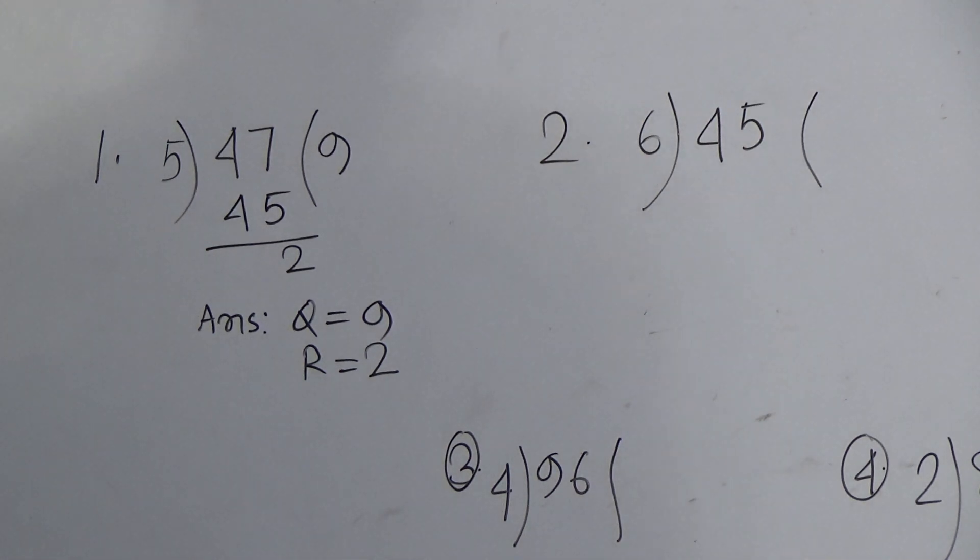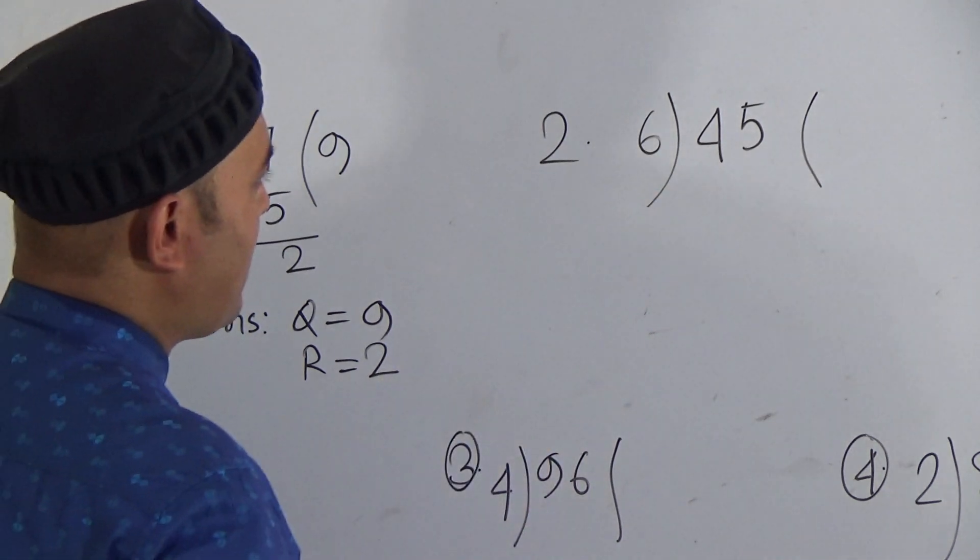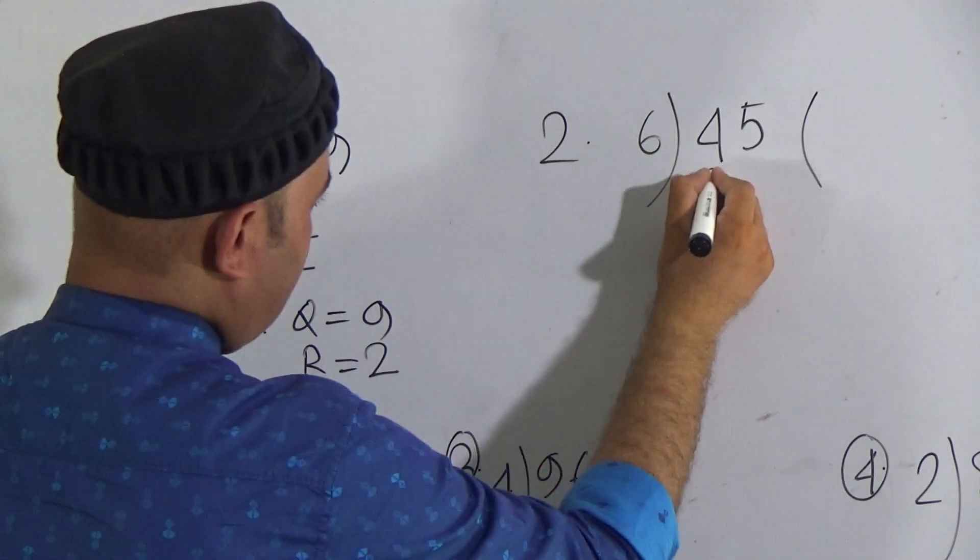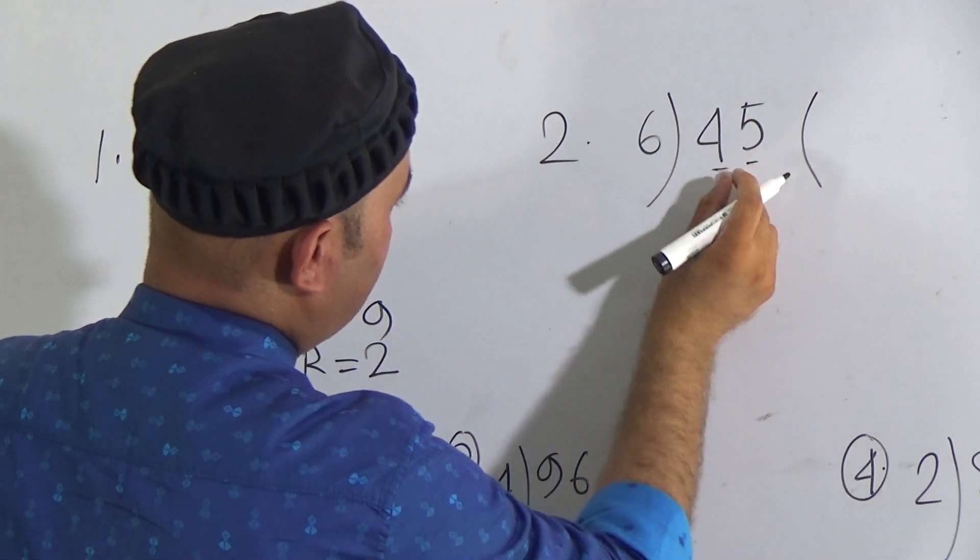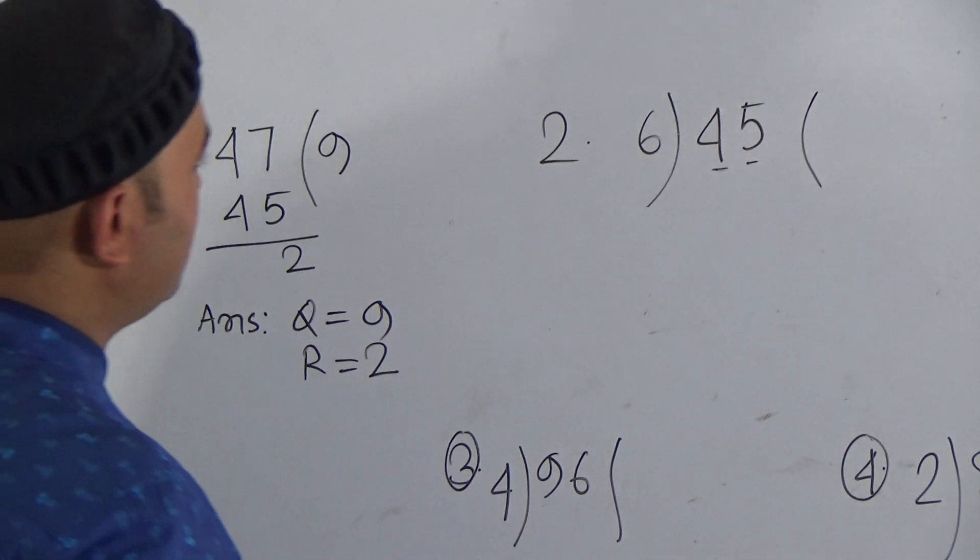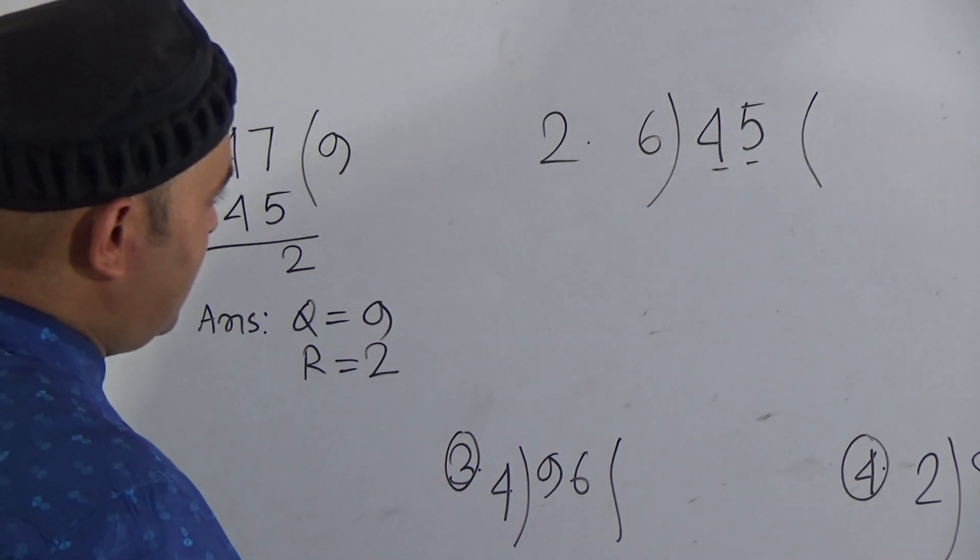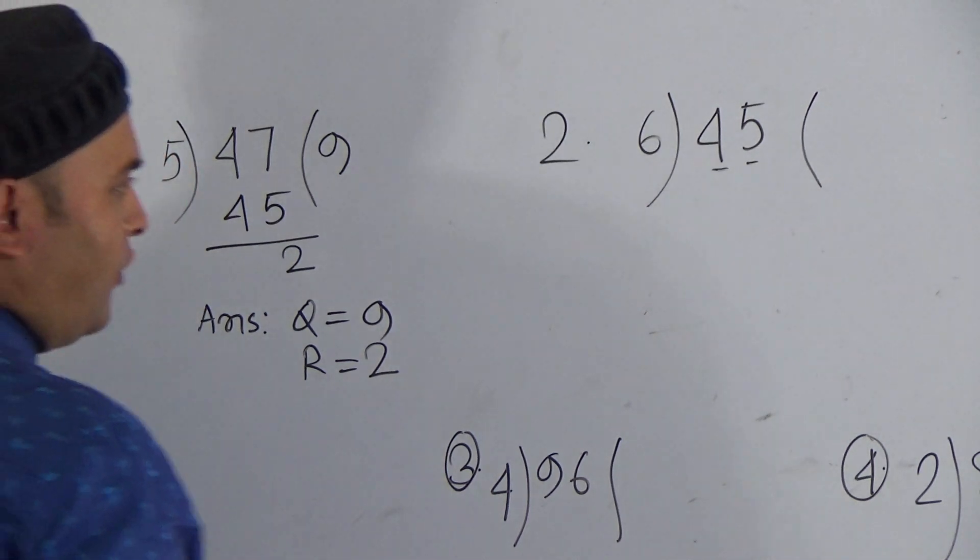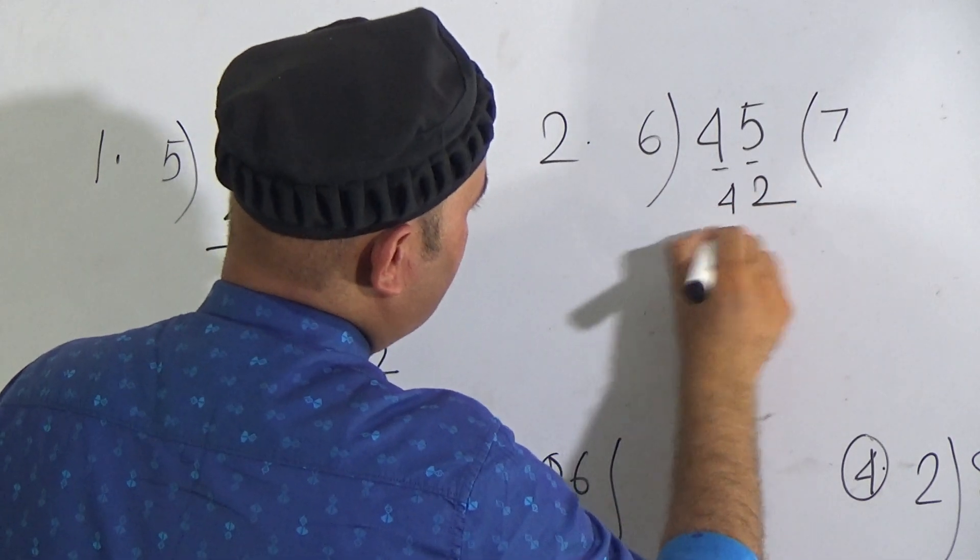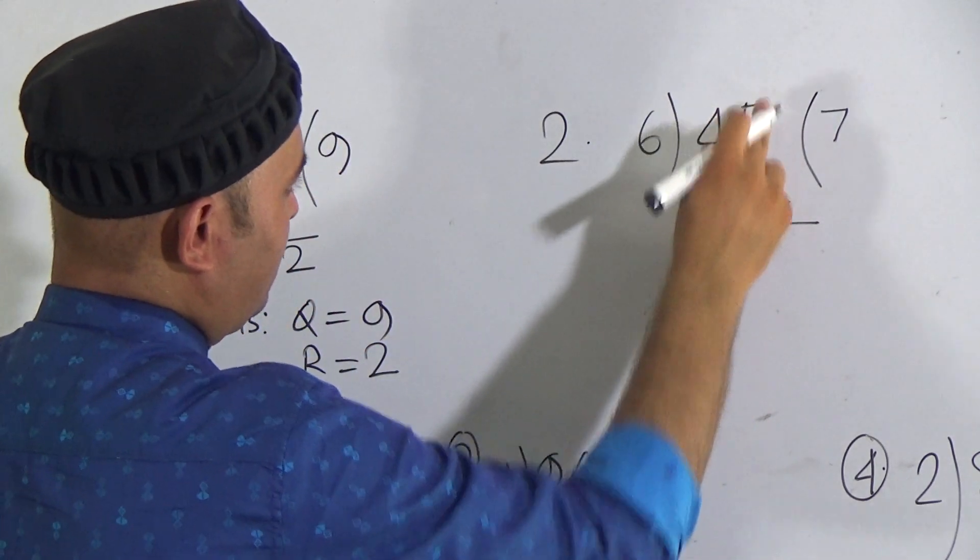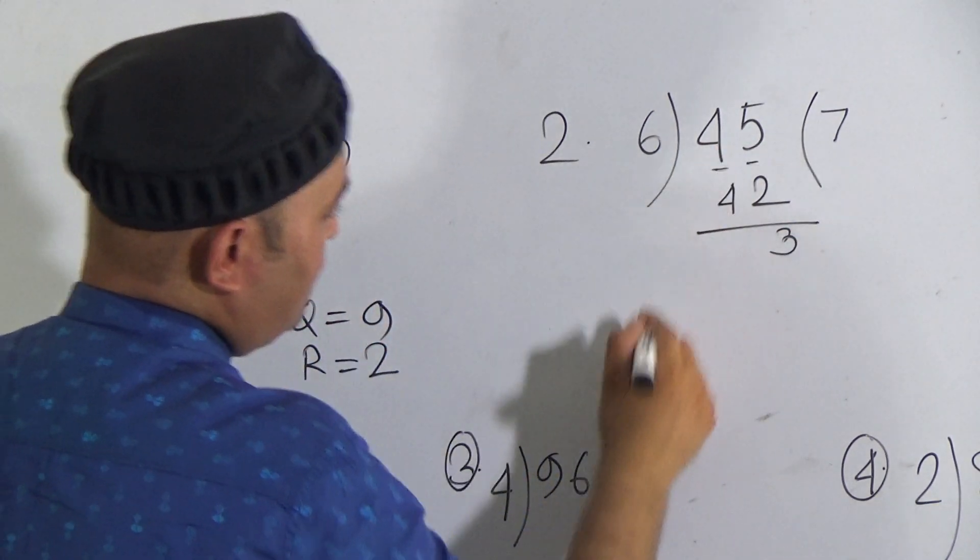Now let us go to question number 2. Here is 45 divided by 6. So here first digit is 4 is smaller than 6, so you have to consider with 5, so it will be 45. Then you have to remember the times table of 6. We know that 6 sixes are 36, 6 sevens are 42. 6 sevens are 42.